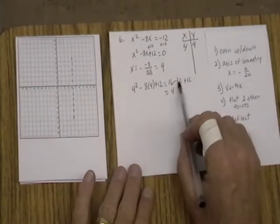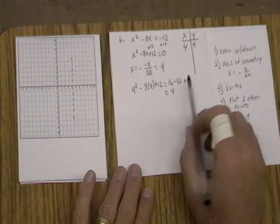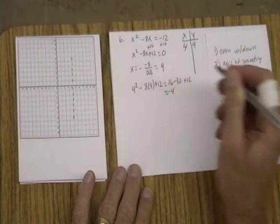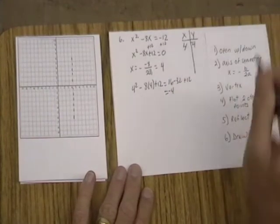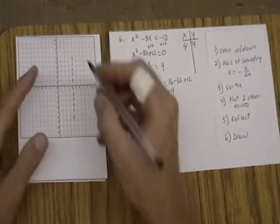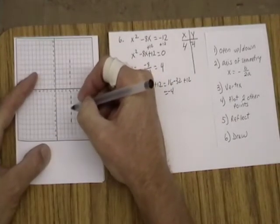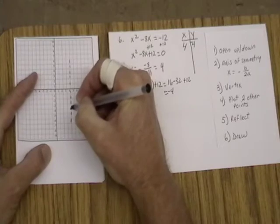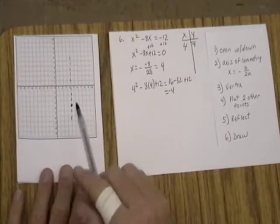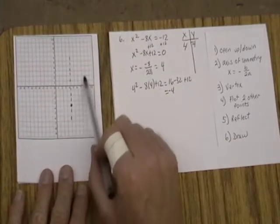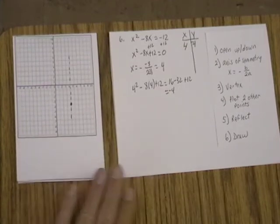Except this is negative 16, and so this really should be a negative 4. So I just made a mistake. There we are, negative 4. And so we're going to go over here to 4, negative 4, and there's our vertex. It opens up, so everything needs to be going above the vertex.